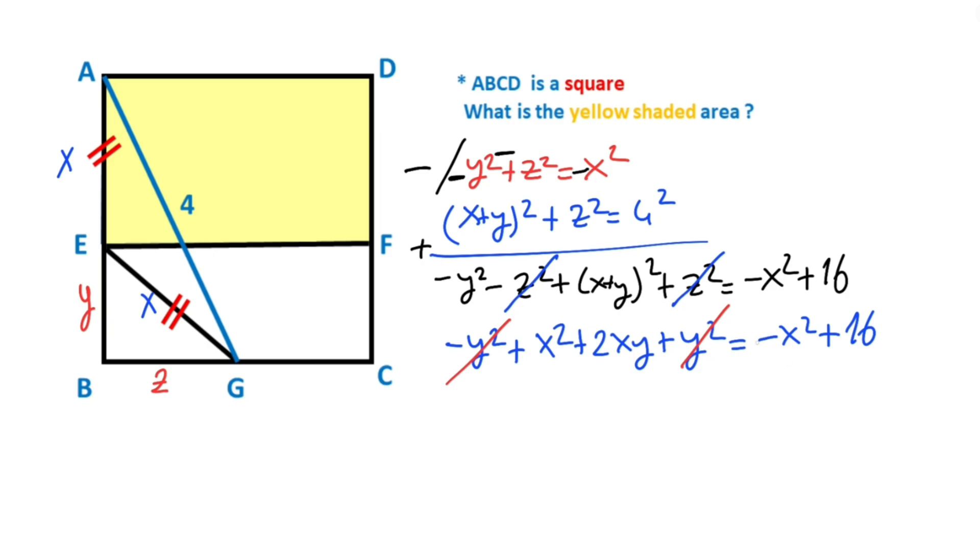If we combine unknown terms on the left side of the equation, therefore X squared plus X squared plus 2XY equals 16.